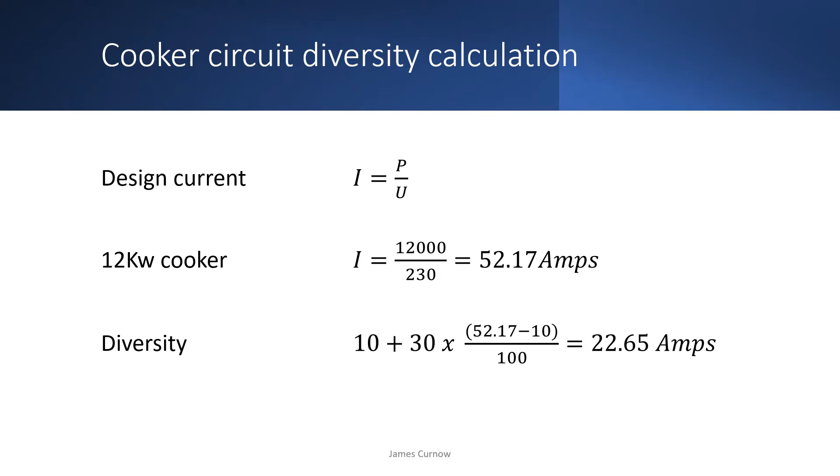You'll be familiar with the way that we calculate the design current by dividing the power by the voltage. So if we take the example of a 12 kilowatt cooker, the design current would be 52.17 amps.